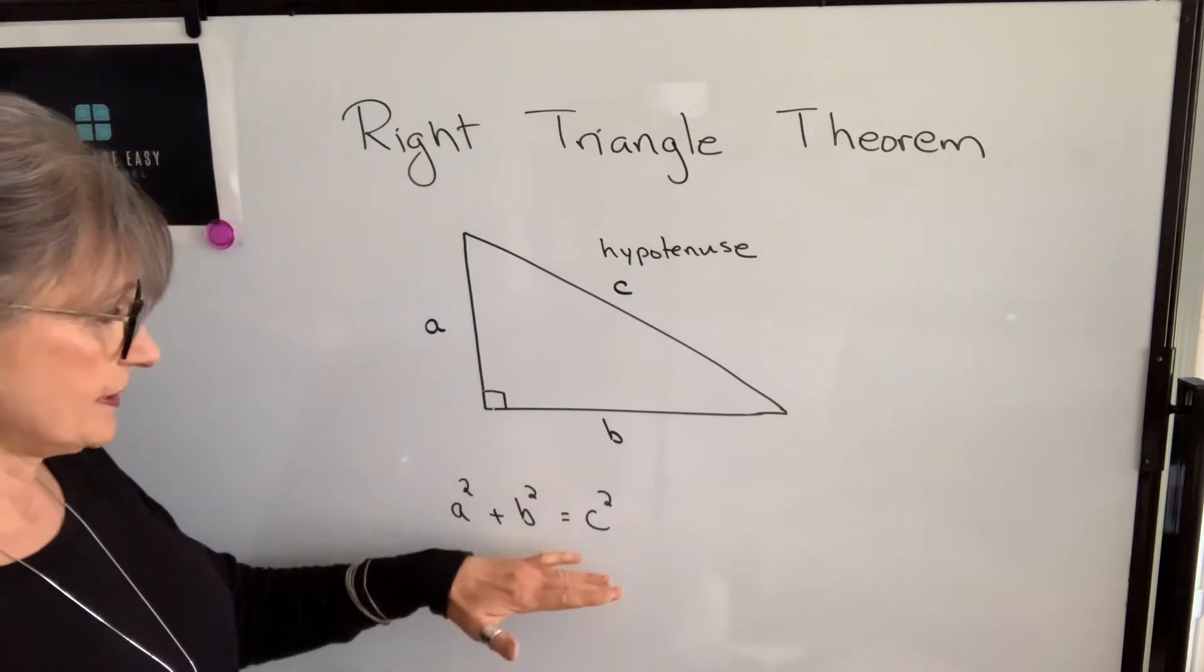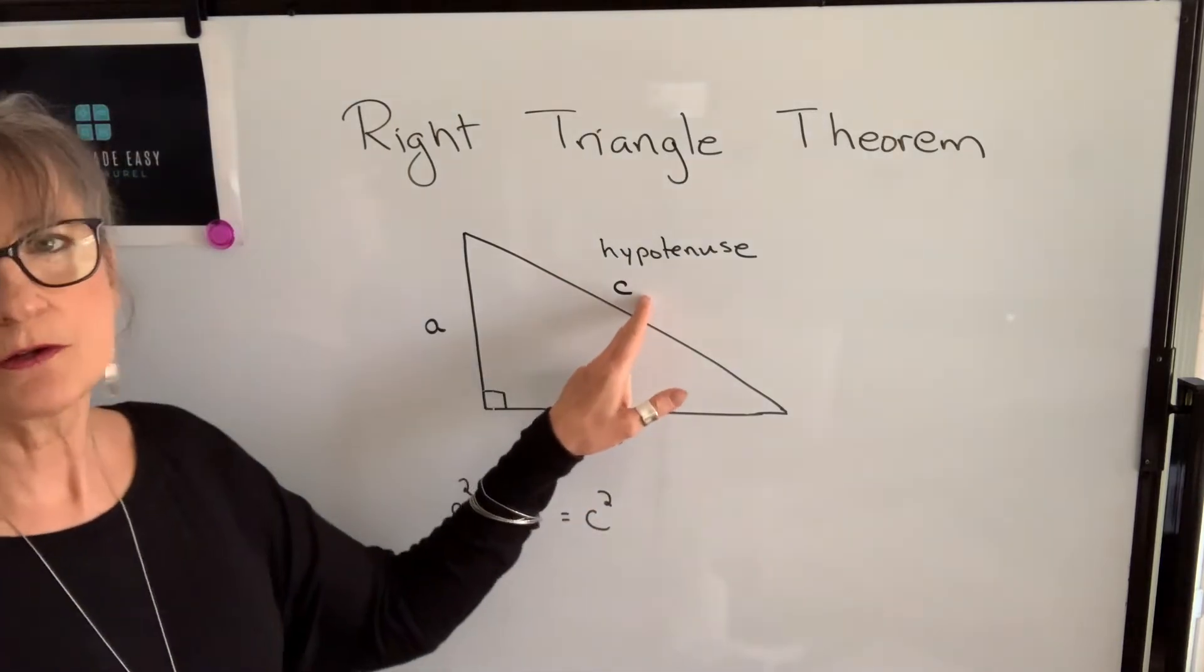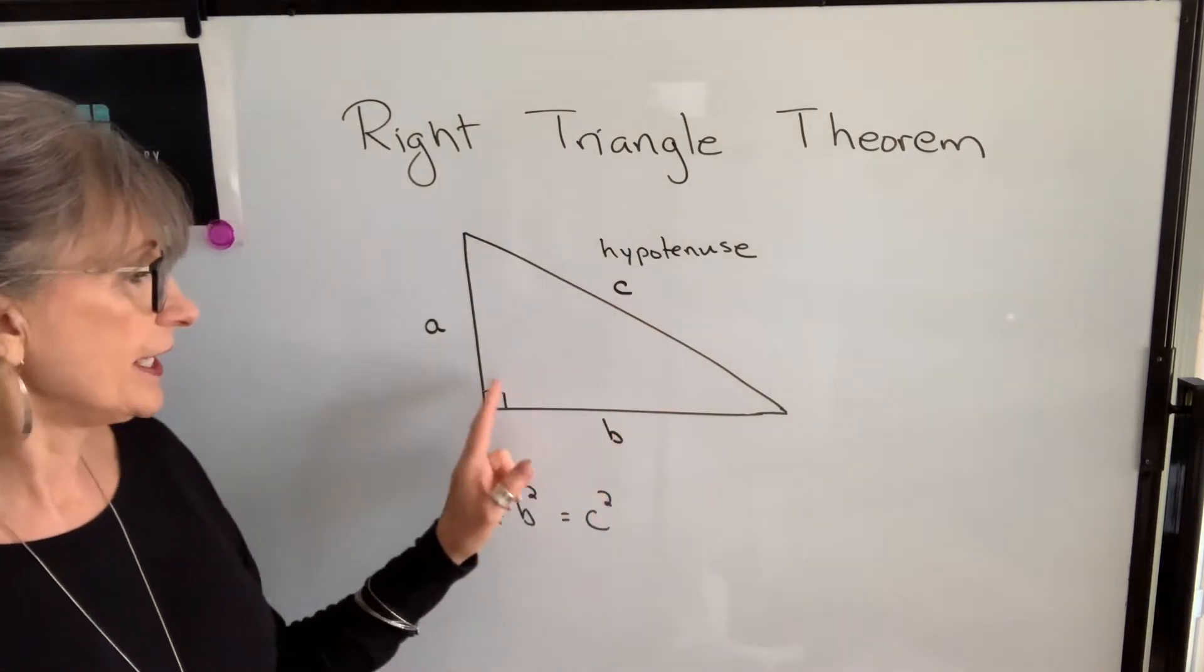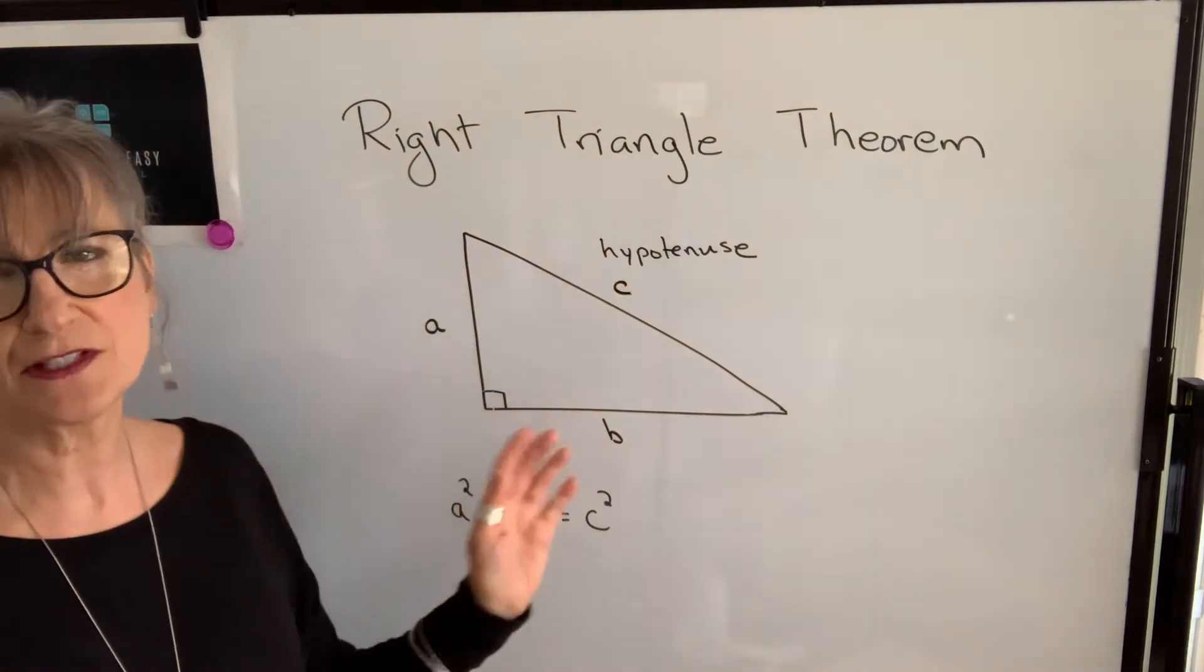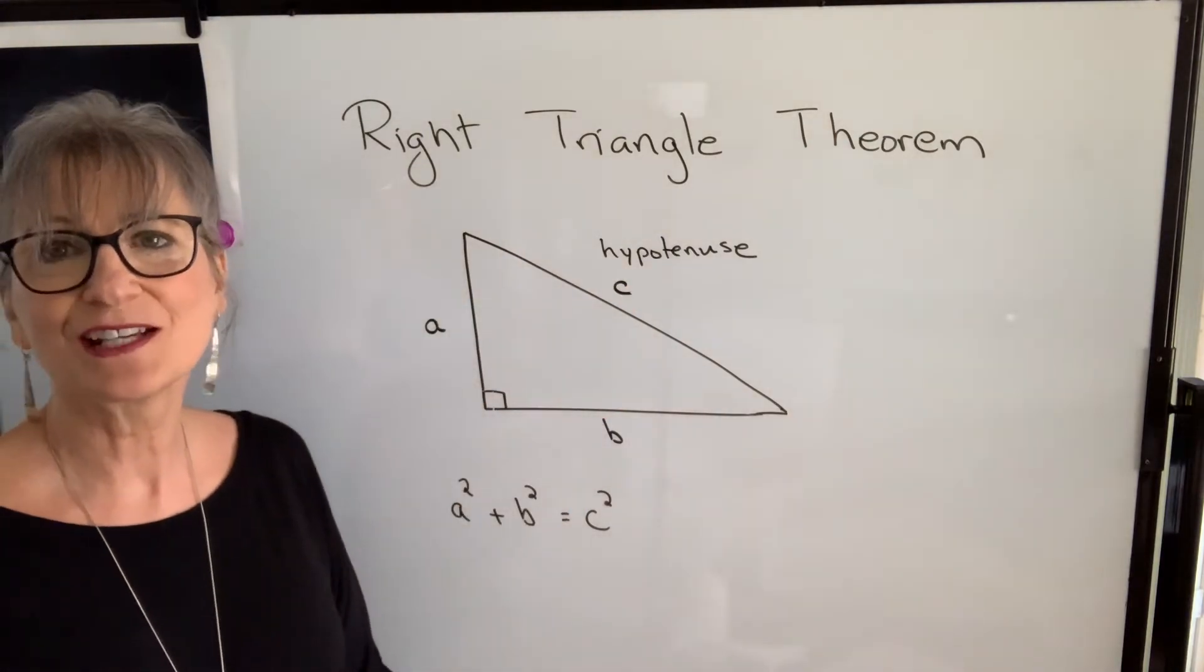So we're going to talk about how we use this theorem to find c. And we're also going to use it to find either a or b when we know c and one of these other sides. So let's take a look at some examples.